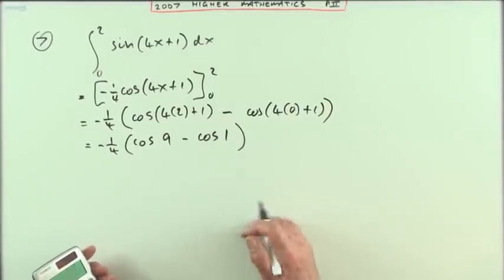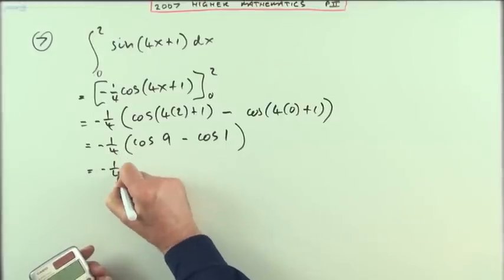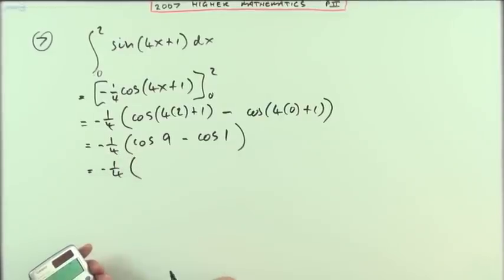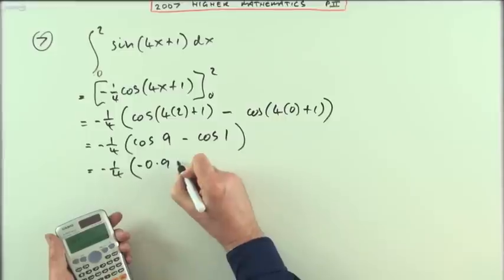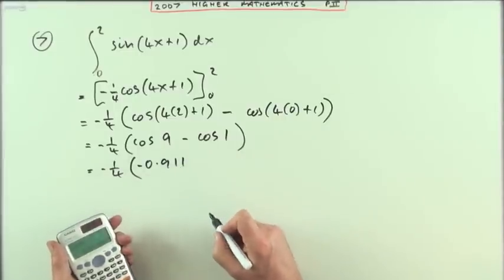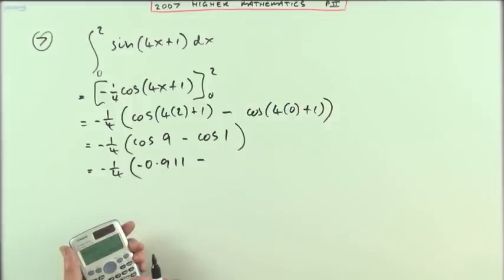Now you could just type that all in one go, that would be the answer to the question, but maybe I'll just put down the two different parts. So there's a cos of nine, which is negative 0.911. I'll just put the first three decimal places down.